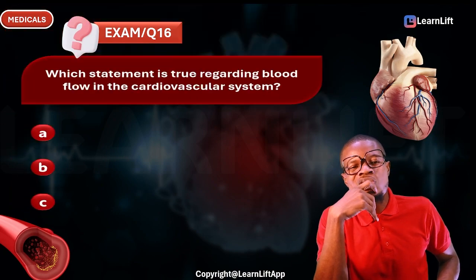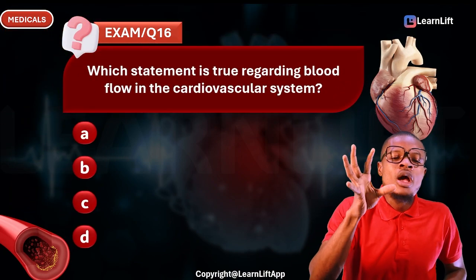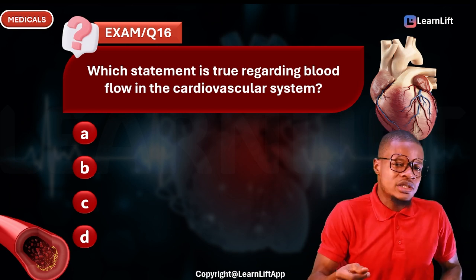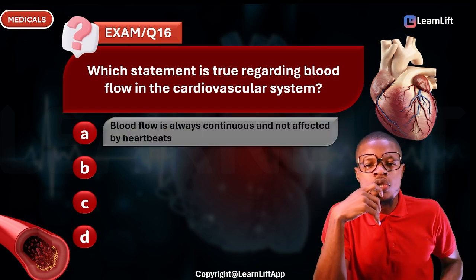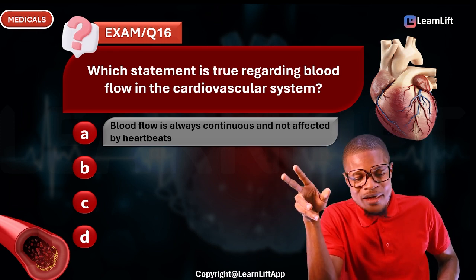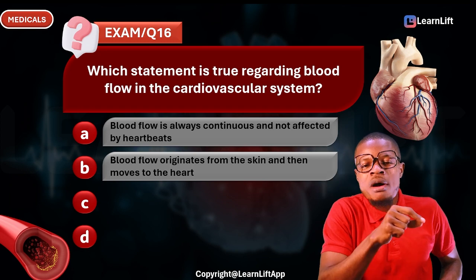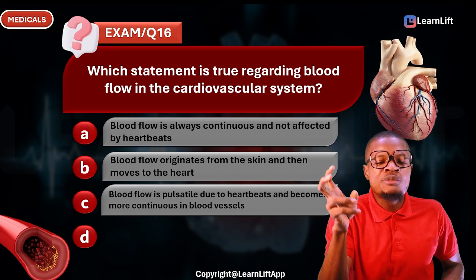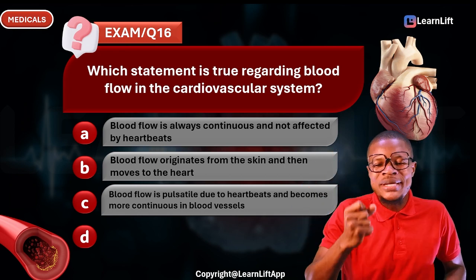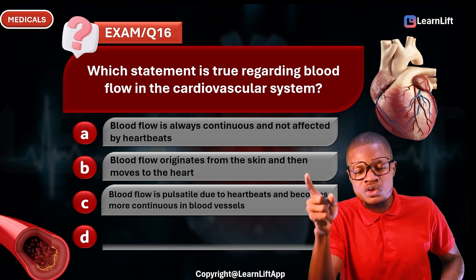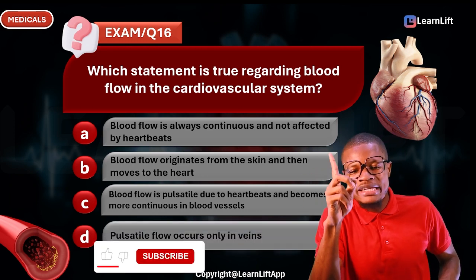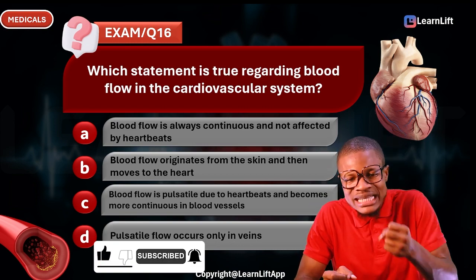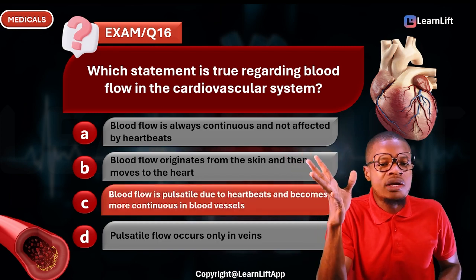Question sixteen: Which statement is true regarding blood flow in the cardiovascular system? Option A: blood flow is always continuous and not affected by heartbeat. Option B: blood flow originates from the skin and moves to adults. Option C: blood flow is pulsatile due to heartbeats and becomes more continuous in blood vessels. Option D: pulsatile flow occurs only in veins. The correct answer is Option C.